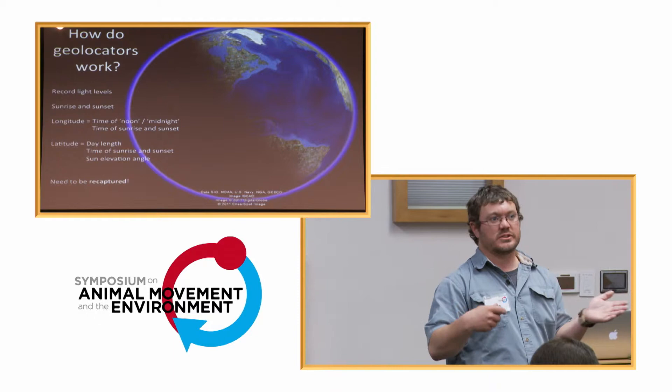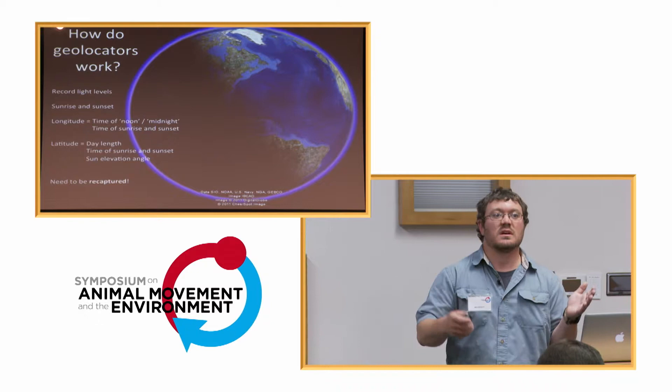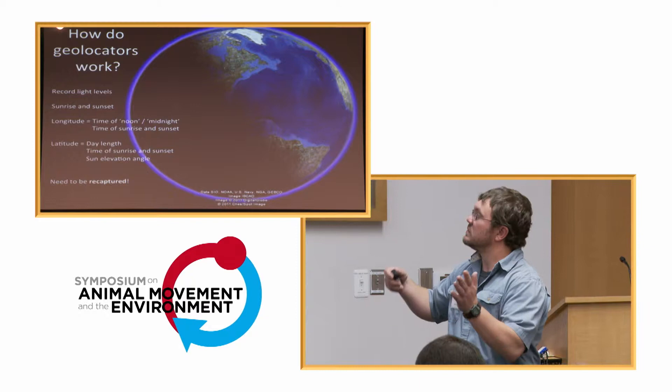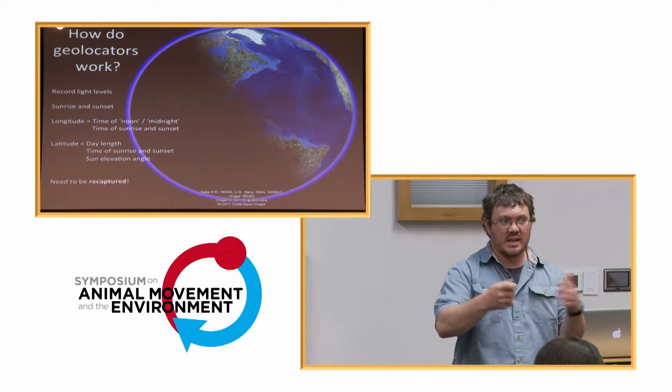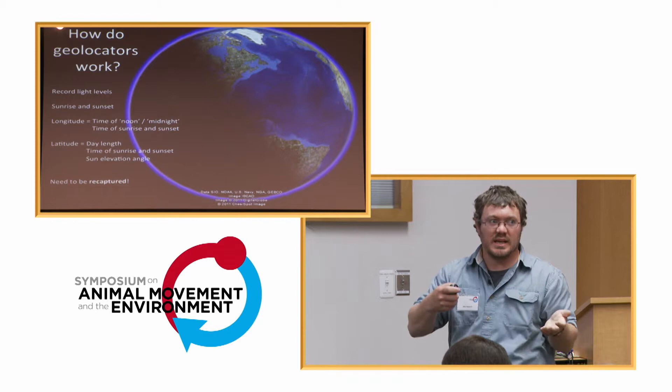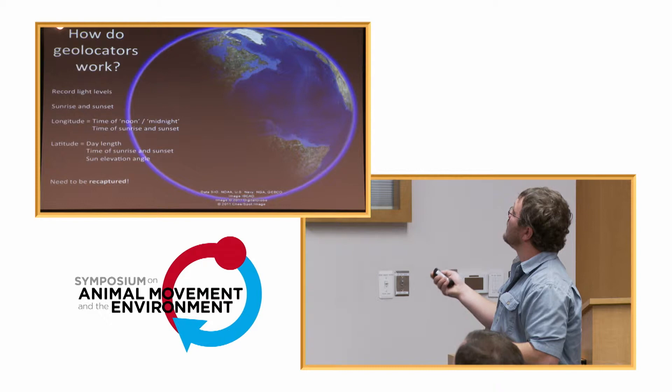How do these geolocators work? They record light levels every two minutes depending on the model, and from that data we record sunrise and sunset. From those data you can get latitude and longitude with some degree of error. Most importantly, these things need to be recaptured to get any data whatsoever — we can't use telemetry that beams you the data; we actually have to get our hands on these birds.